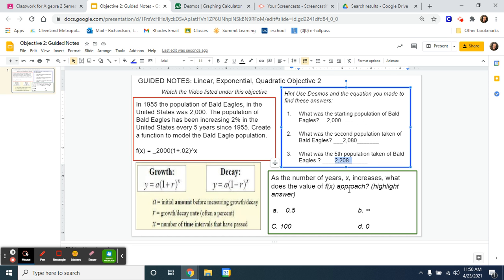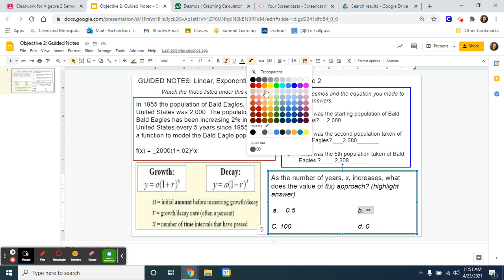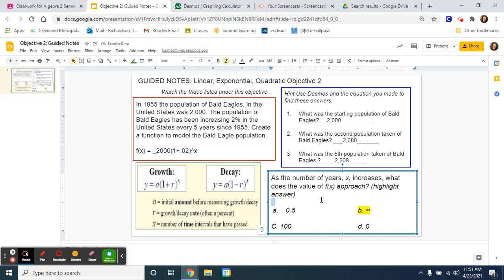So this is saying, as your years are going up, your population is going up. So what is your population getting closer and closer to? If it's getting bigger and bigger and bigger, what is it getting closer to? So my options here are 0.5, 100, infinity, or zero. If this is just getting bigger and bigger and bigger and bigger forever, then it's getting closer and closer to infinity. You can never reach infinity, but it's getting closer to it. Now, if this problem was decreasing or was getting smaller and smaller and smaller, it would be getting closer to 0. But since we're increasing, it's getting closer to infinity.